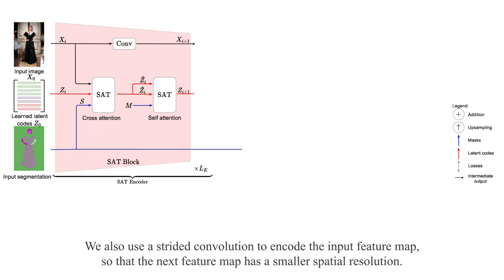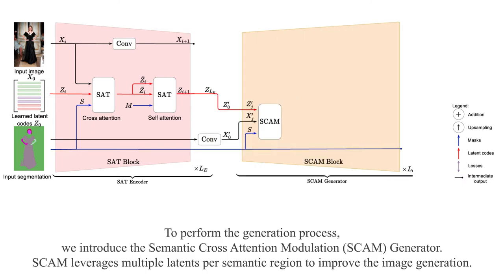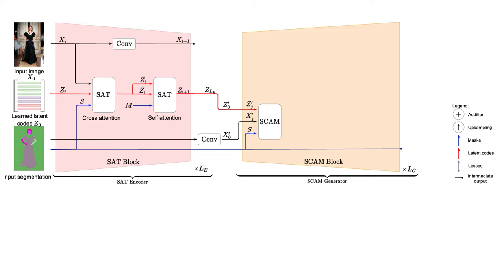We also use a strided convolution to encode the input feature map so that the next feature map has a smaller spatial resolution. To perform the generation process, we introduce the semantic cross-attention modulation generator, or SCAM. SCAM leverages multiple latents per semantic region to improve the image generation.